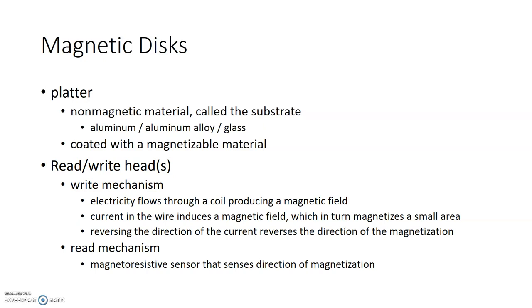So when the write mechanism is going over the drive, depending on the current, the direction of the current going through the coil, it'll basically set north-south in terms of the magnetized particles, which is the equivalent of true-false.